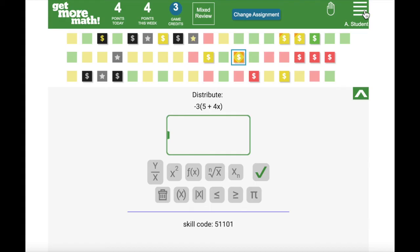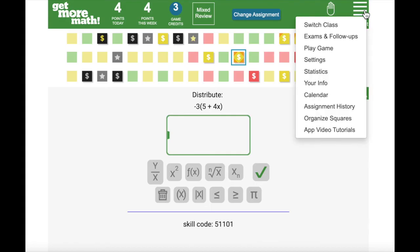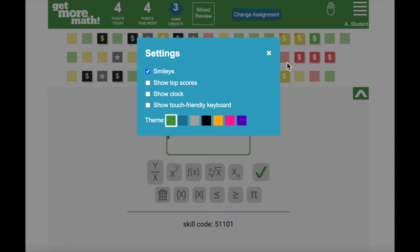You'll also see four lines in the top right corner of your dashboard. When you click on the four lines, you open up the student menu. From here, you can change various settings. For example, you can choose whether or not the smileys fall when you answer a problem correctly, or maybe you'd like to change the theme color of your account.